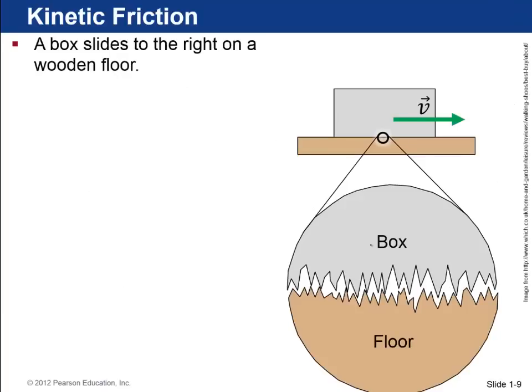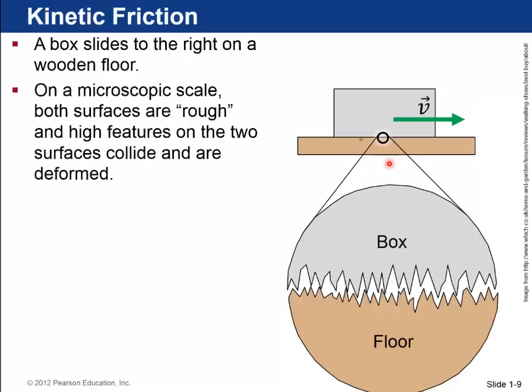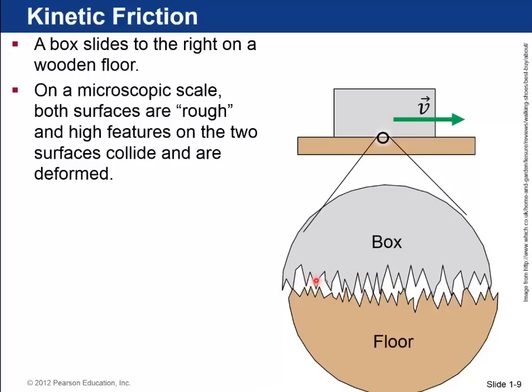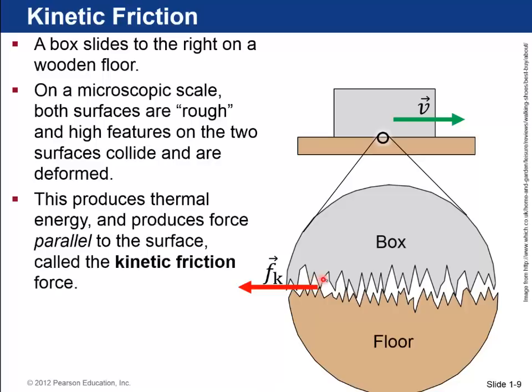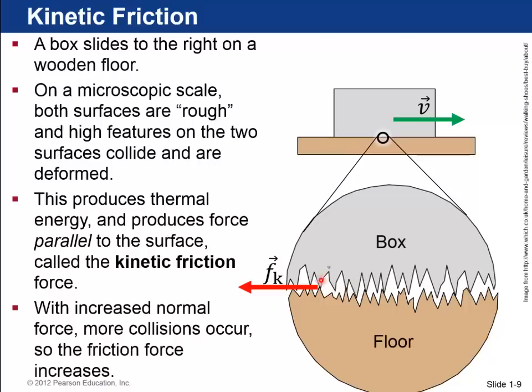Okay, next is kinetic friction. So now let's consider a box, this gray box, which is sliding to the right on a wooden floor. On a microscopic scale, both surfaces are rough, and what will happen here is that these top surfaces of the box will collide with the floor. And as it's doing that, there's a thermal energy produced, there's a sound, sort of a rubbing sound, and there's a force produced parallel to the surface called the kinetic friction force. And it turns out that if you increase this normal force again, you increase this kinetic friction force.